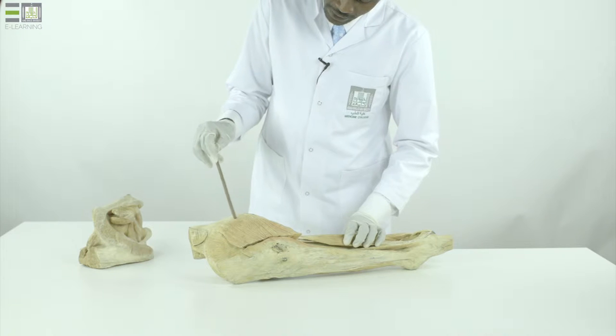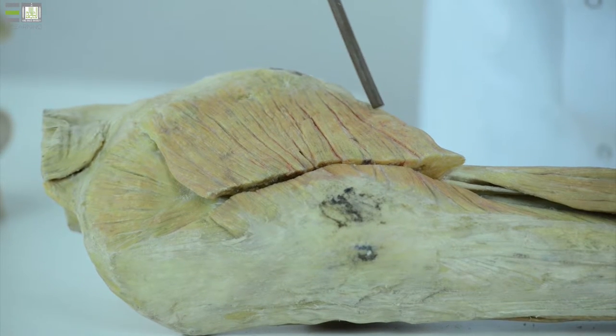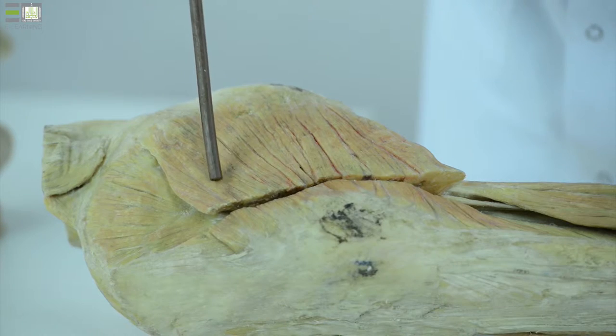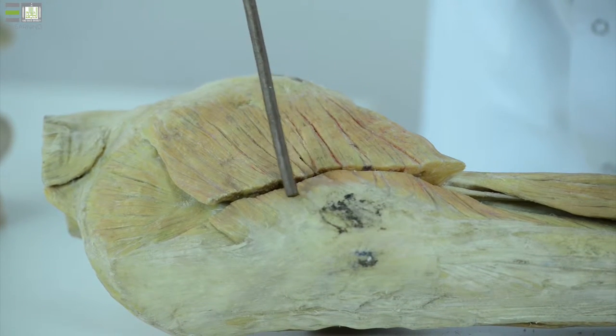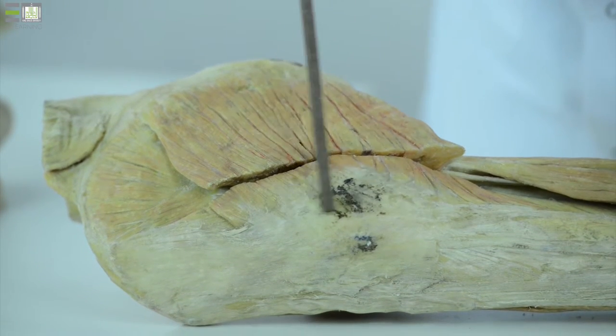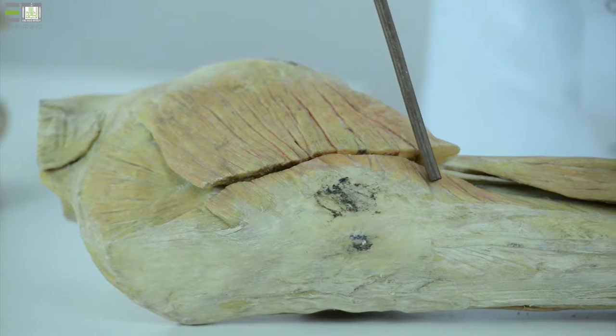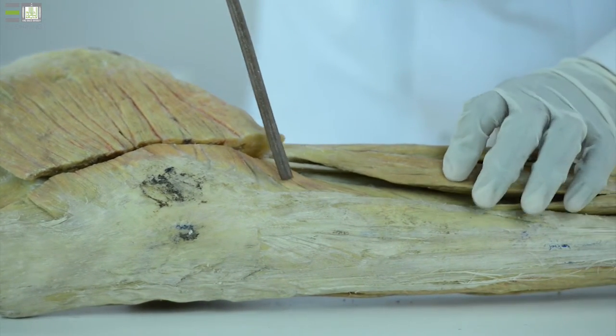This muscle attaches to the sacrum, to the sacrotuberous ligaments, and to the outer surface of the hip bone. About three-fourths of the fibers of this large muscle attach to the iliotibial tract and one-fourth to the gluteal tuberosity on the upper part of the femur.